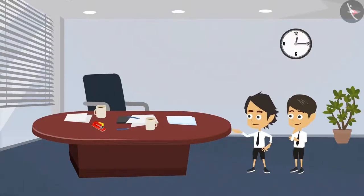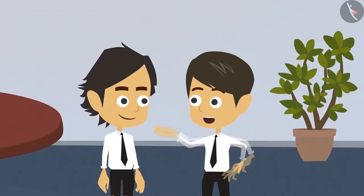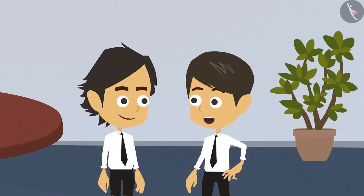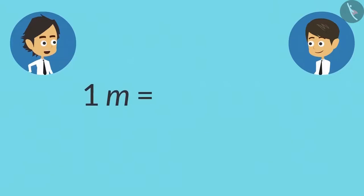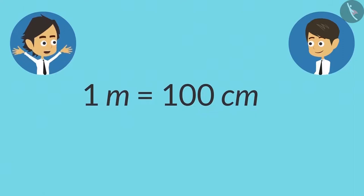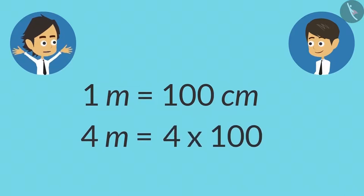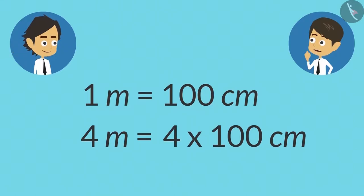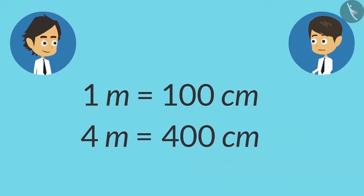We converted our height from centimeters to meters, but if we have to convert meters into centimeters, what should we do? That is very easy. Since one meter has 100 centimeters, if an object is 4 meters long, we multiply by 100. So the length of a 4-meter object in centimeters is 4 multiplied by 100, which equals 400 centimeters.